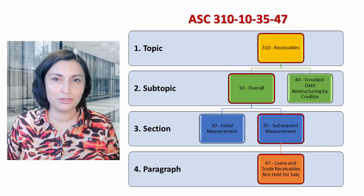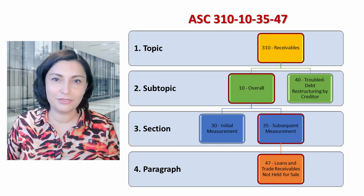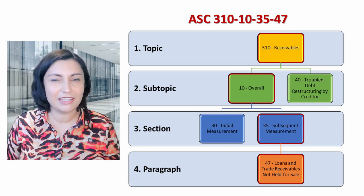I will show you how to do it in the codification research system at the end of the video. Note that when the codification doesn't cover a certain type of transaction or event, other accounting literature should be considered, such as FASB concept statements, international financial reporting standards, and other professional literature. Fortunately, this doesn't happen very often.